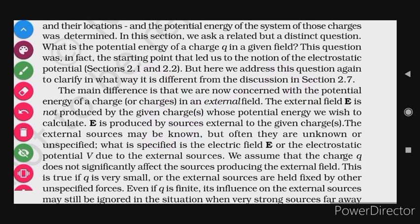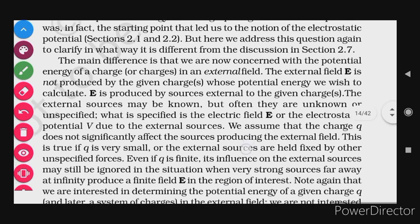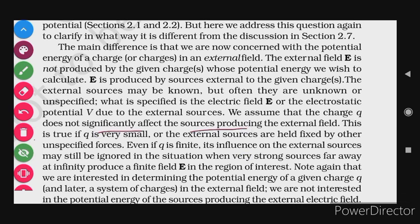But now, in this case, the source of the external field will be unknown to us. There will be an external field, but the source is unknown. Here we find the potential energy of a charge produced by sources external to the given charge. The source of the electric field may be known, but most of the time it is unknown. What is only given is the potential due to this external electric field at the point where we will find the potential energy of the charge.